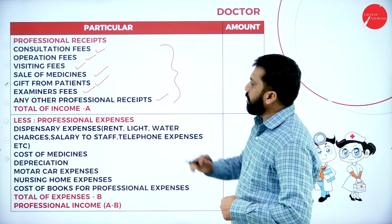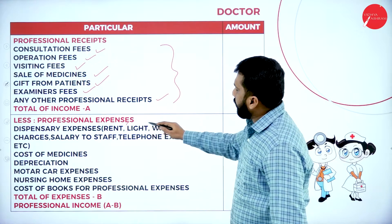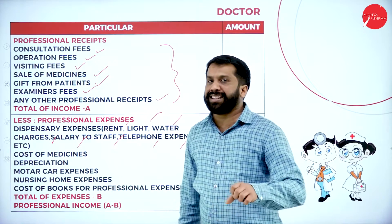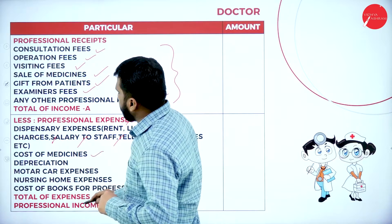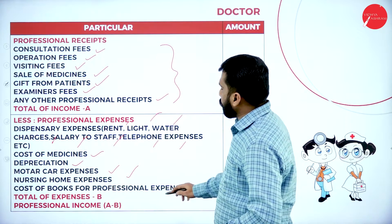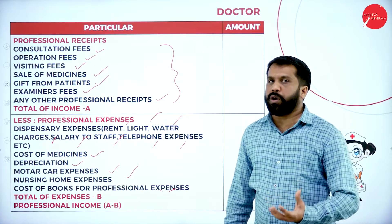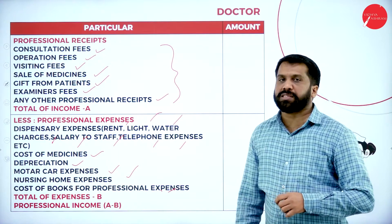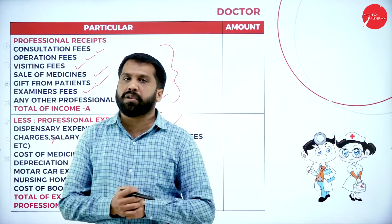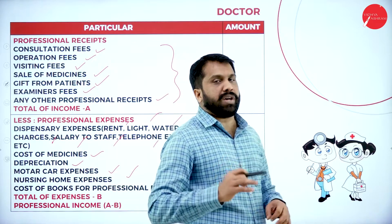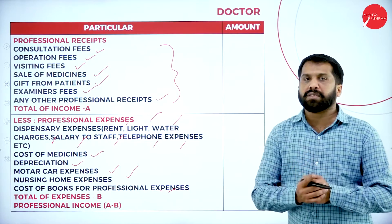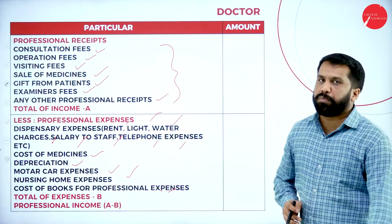These are the professional payments: dispensary expenses including rent, light and water charges, salary, staff telephone expenses; cost of medicine; depreciation on motor vehicle; nursing home expenses; cost of professional medical books; and stationery — sheets, pens, and printer expenses. These all come under professional expenses.